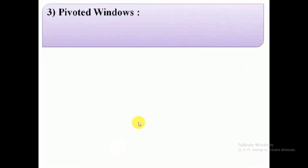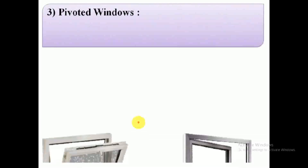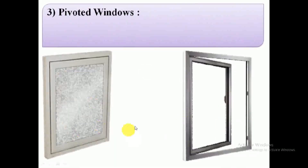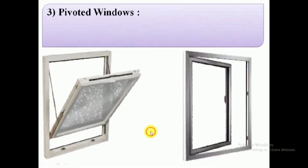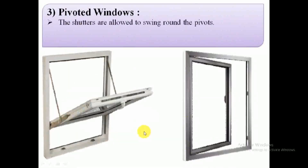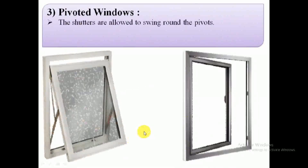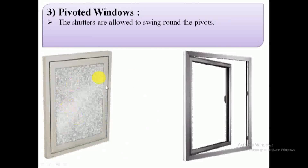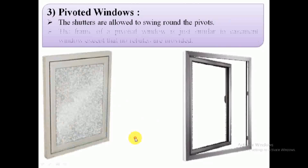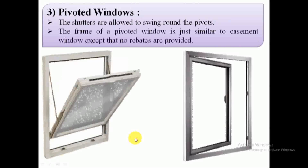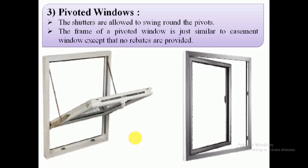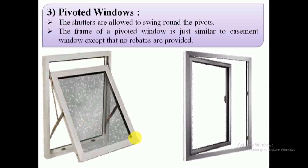3. Pivoted windows. In these windows, the shutters are allowed to swing round pivots fixed to the window frame. The window frame has no hinges to fix the window shutter. The frame of the window shutter is similar to that of an encased window. The shutter can swing or rotate either horizontally or vertically.